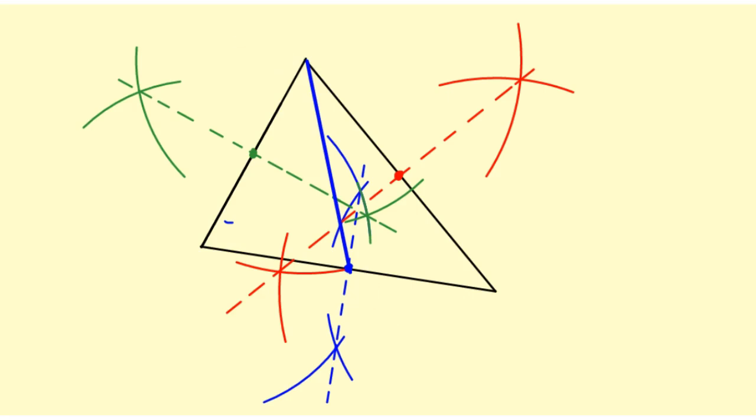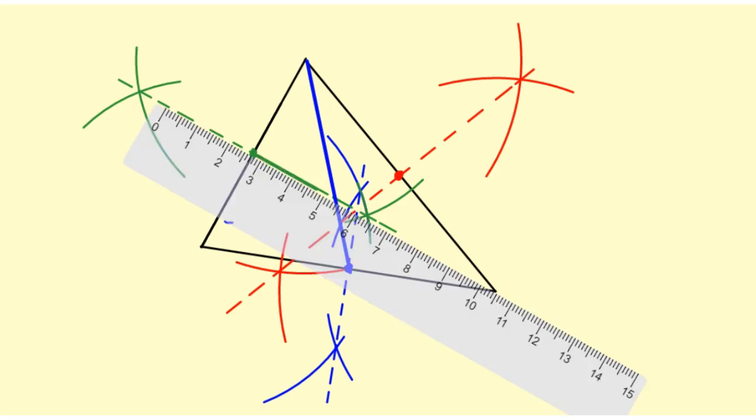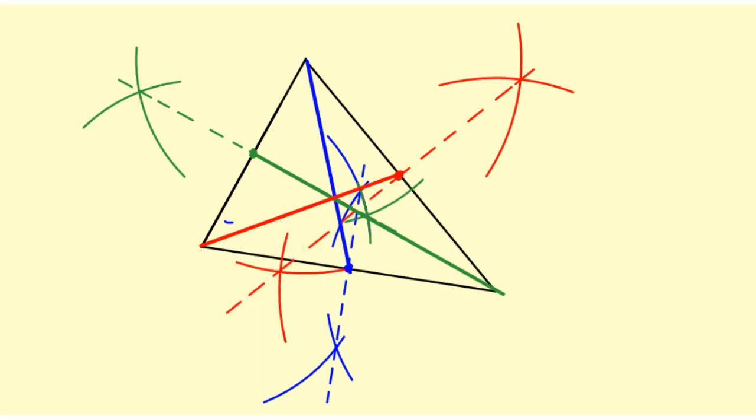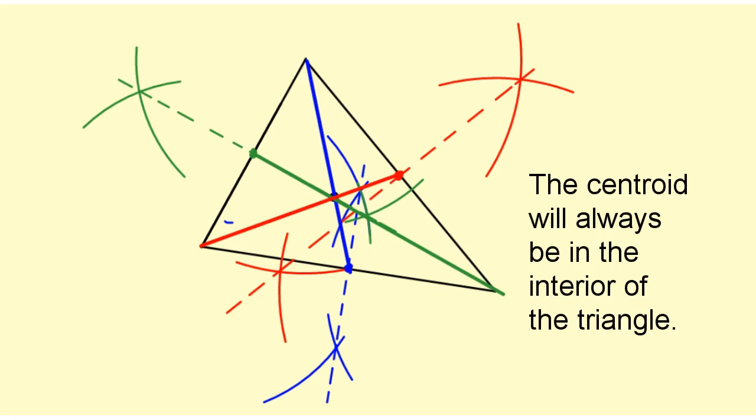And now I will draw the other two. All three of the medians intersect right here at a point that we call the centroid. The centroid will always be in the interior of the triangle.